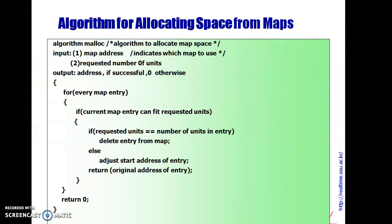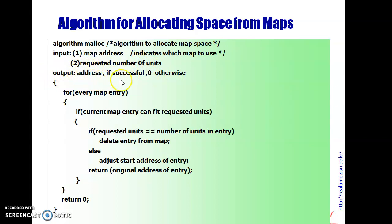Now let us go through the algorithm for allocating Swap Space from the Map. The name of the algorithm is malloc. There are two inputs: first, the Map address — meaning the exact location where we can allocate — and second, the requested number of units. The output is an address: if the algorithm executes successfully we get an address, otherwise it returns 0.